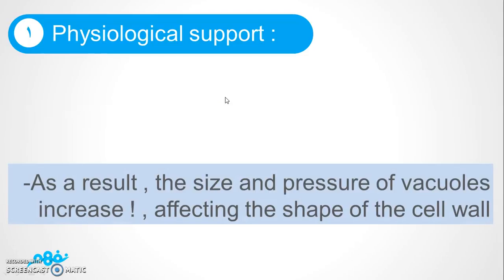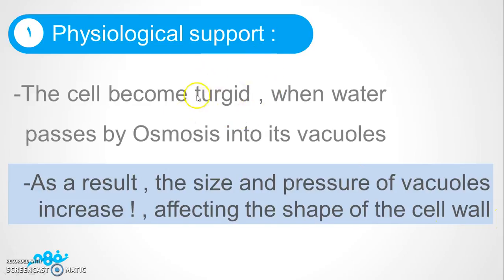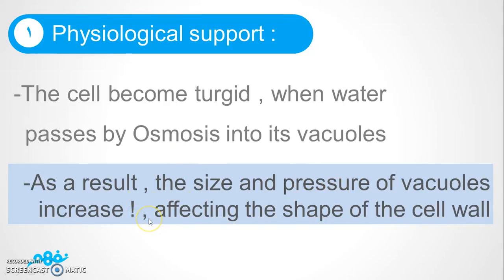If the plant has turgor support, it has increased pressure surely affecting the shape of the cell wall to become turgid. This happens when water passes to vacuoles by osmosis — water passes to vacuoles, then pressure increases, then size increases, then the cell wall becomes turgid. That's all about the physiological support.